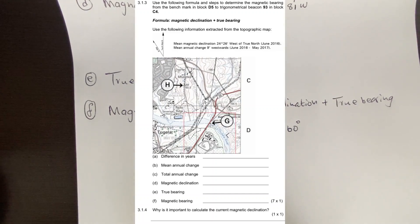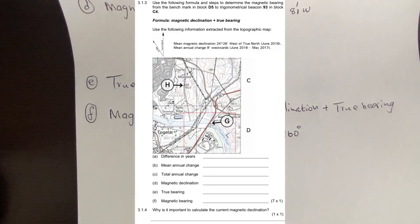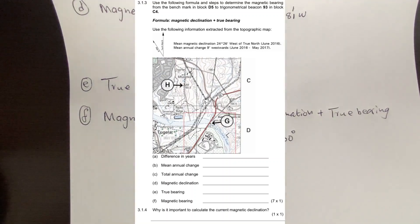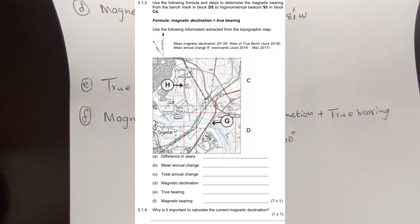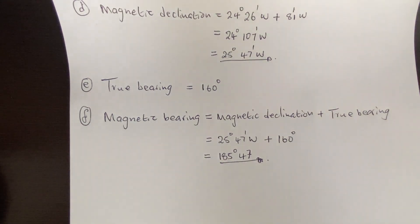The last part asks: why is it important to calculate the current magnetic declination? There are two answers. Number one: it changes over time — it changes yearly. Number two: you would want to calculate the accurate or correct magnetic bearing.